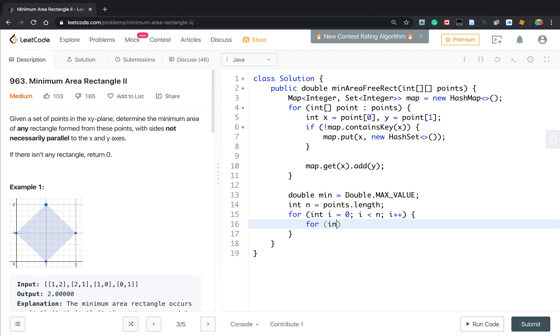And the second point, i plus 1, j less than n j plus plus. So now we can calculate dx1, which is the points j0 minus points i0. And the dy1 will be points j1 minus points i1.